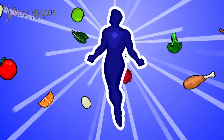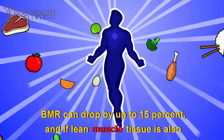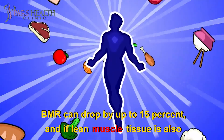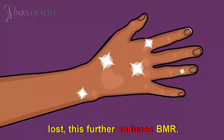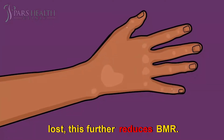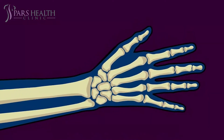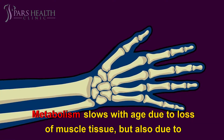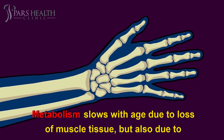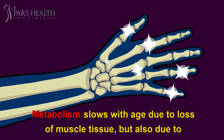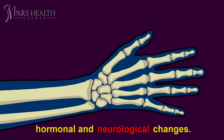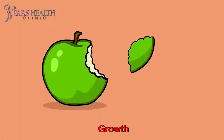Crash dieting, starving, or fasting — eating too few kilojoules encourages the body to slow the metabolism to conserve energy. BMR can drop by up to 15%, and if lean muscle tissue is also lost, this further reduces BMR.